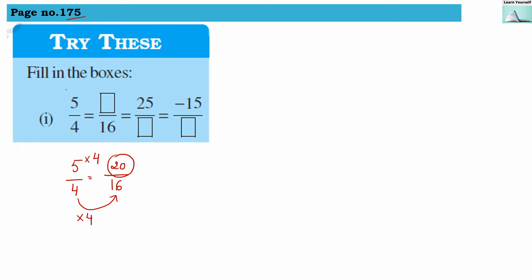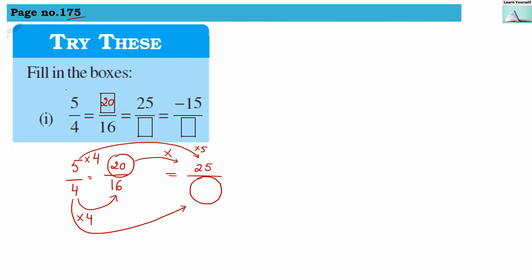So the answer for the first one is 20. The next has 25 in it — from 20 we cannot get 25, so we must have multiplied 5 by 5 to get 25. For the denominator, we multiply 4 by 5 to get 20, so 20 will be the answer for the second place.